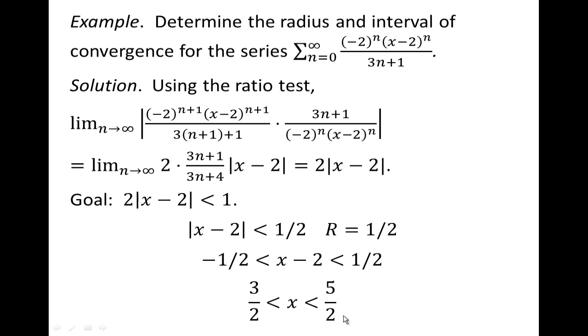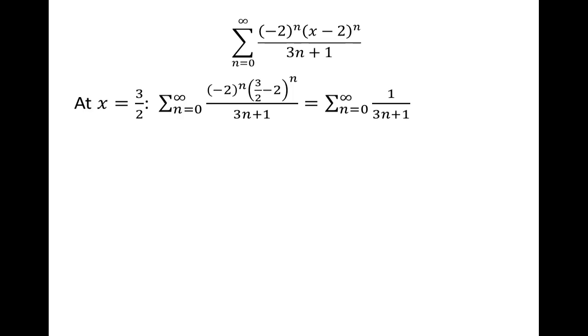To find the interval of convergence, I need to determine whether or not I converge at 3 halves and at 5 halves, so we'll check 3 halves first. Sometimes we might converge at one, sometimes we might converge at both, or we may not converge at either.